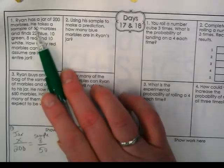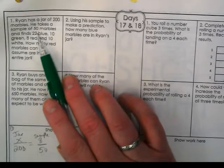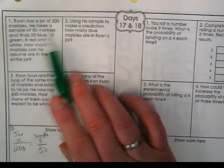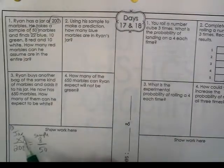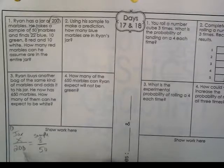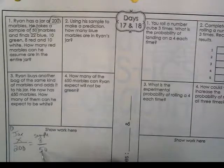Looking at problem one, we've got a jar with 200 marbles. Ryan takes a sample of 50 marbles. We're going to take those two numbers. Those are our holes for two different ratios. In the jar, it's a total of 200. In the sample, we know there's 50.